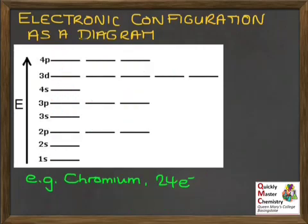One final practice for you to try, chromium, 24 electrons, what would the diagram look like?